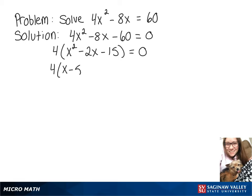Then we're going to rewrite this as 4 times x minus 5 times x plus 3 equals 0.